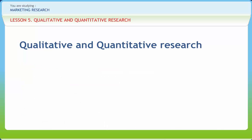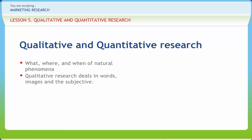Let us begin with defining qualitative research. Qualitative research deals in words, images, and the subjective. It develops and employs mathematical models, theories, and hypotheses pertaining to natural phenomena, involves large samples of subjects, deals with cause or effect, and is also associated with positivism — that objective truth can be known with certainty through rational methods.